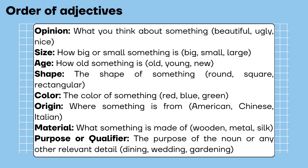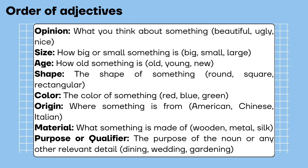Color — the color of something: red, blue, green. Origin — where something is from: American, Chinese, Italian. Material — what something is made of: wooden, metal, silk. Purpose or qualifier — the purpose of the noun or any other relevant detail: dining, wedding, gardening.